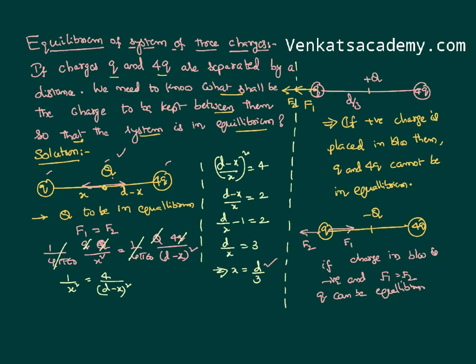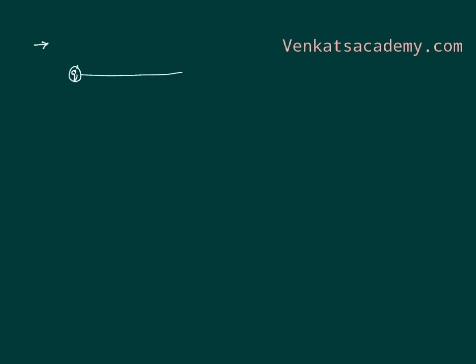So the conditions identified so far are: the charge must be placed at d/3, and it must be a negative charge. The next thing we need to find out is what shall be the magnitude of that negative charge. Let us go back to the problem: I have kept q here, 4q here, and a negative charge at d/3.